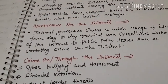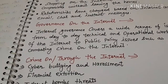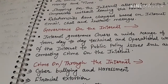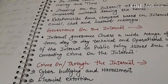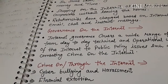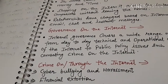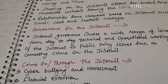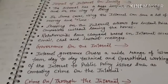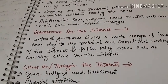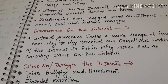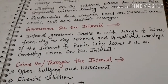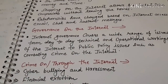The next point is governance on the internet. What has affected the government? The government's new schemes and online forms can be filled using the internet. We don't need to go out. We can access information about government schemes through the internet.